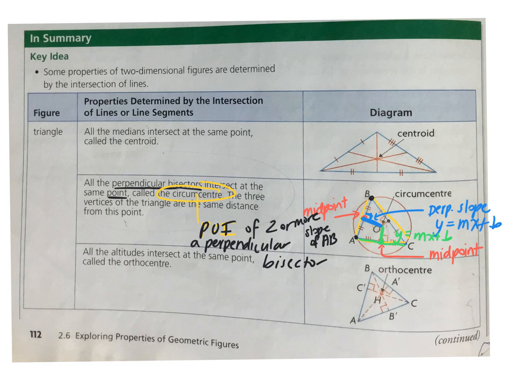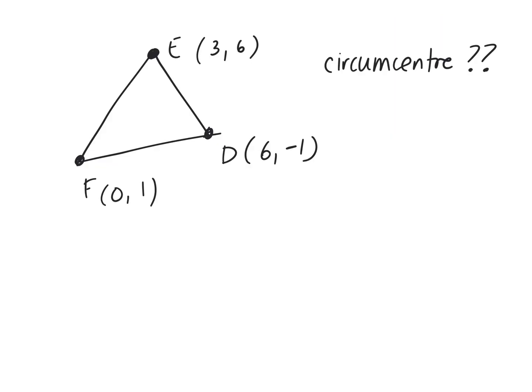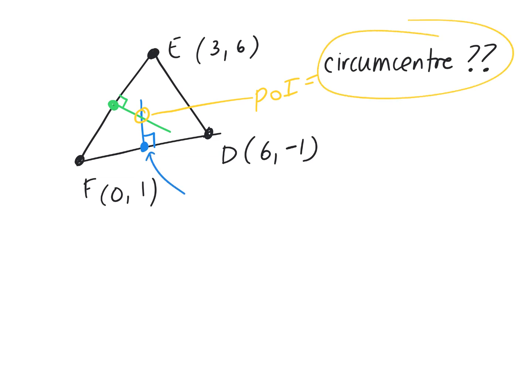So if you're given a triangle and trying to find the circumcenter, I'd draw a picture first. What are we finding? The point of intersection of two perpendicular bisectors. I figure out where one side bisects, draw a perpendicular line there, then find where the next side bisects and draw a perpendicular there. That point of intersection gives you the circumcenter.